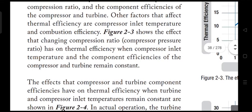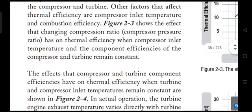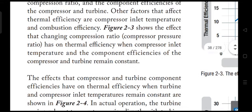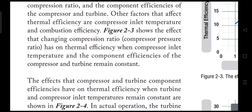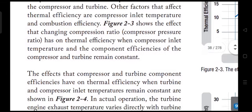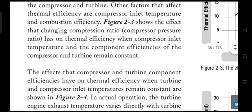The third factor is component efficiency. The two main components are the compressor and the turbine. These are mechanical things with blades that rotate. If they rotate smoothly, efficiency is high. If they are very heavy and difficult to move, a lot of work is wasted rotating them, resulting in low efficiency. Components should rotate with less power but generate more torque.